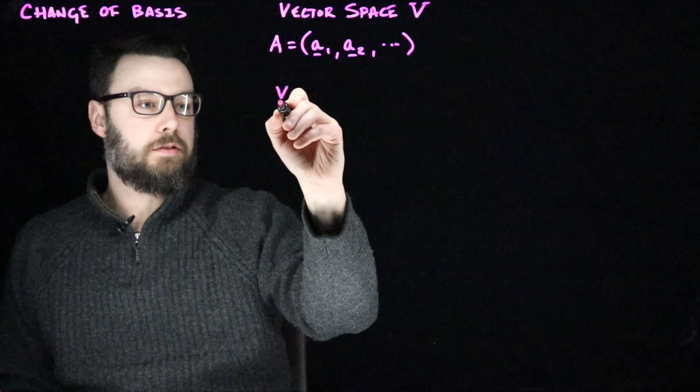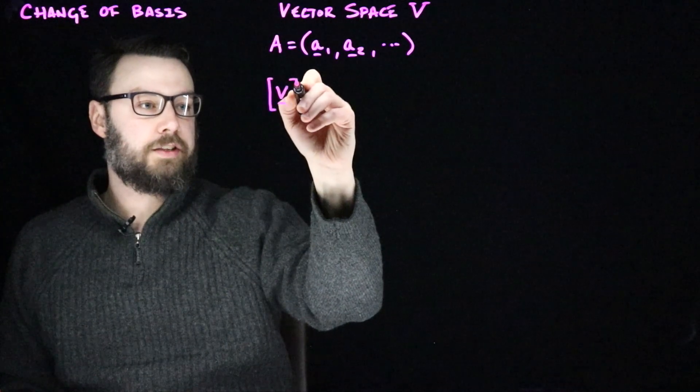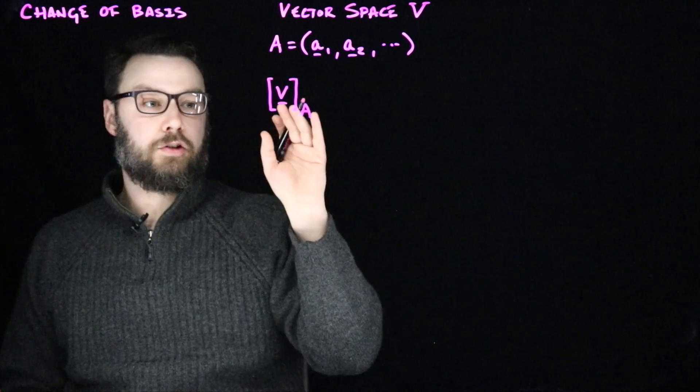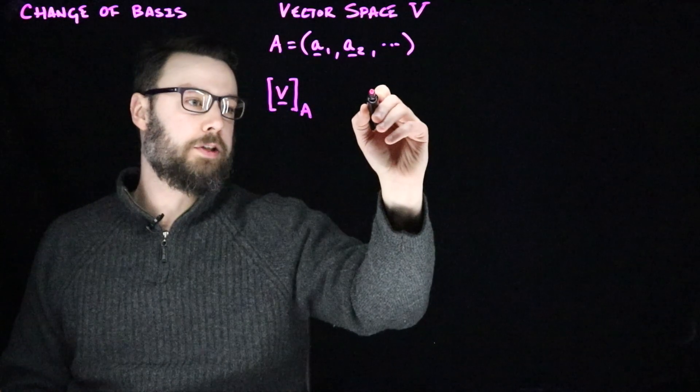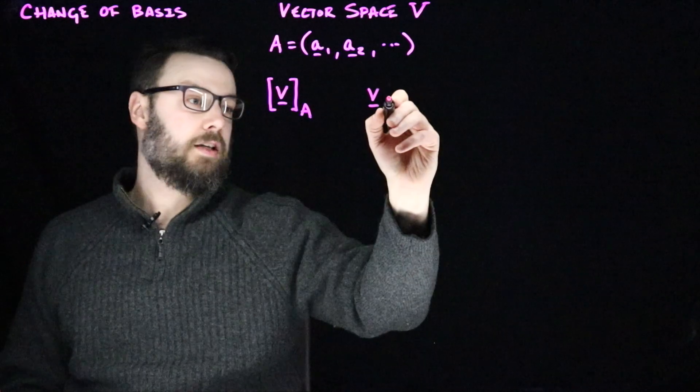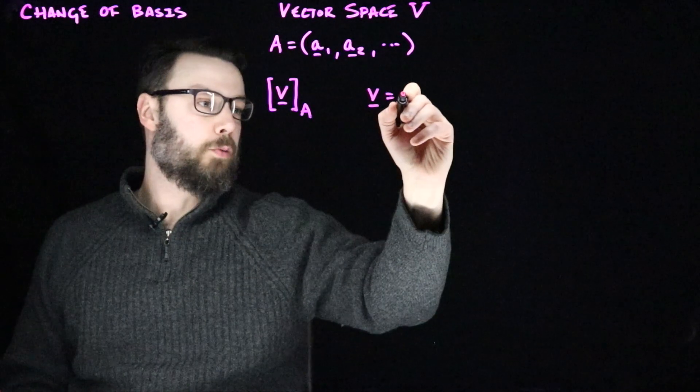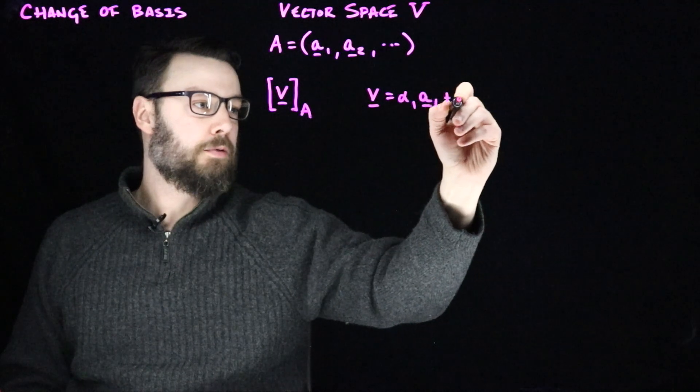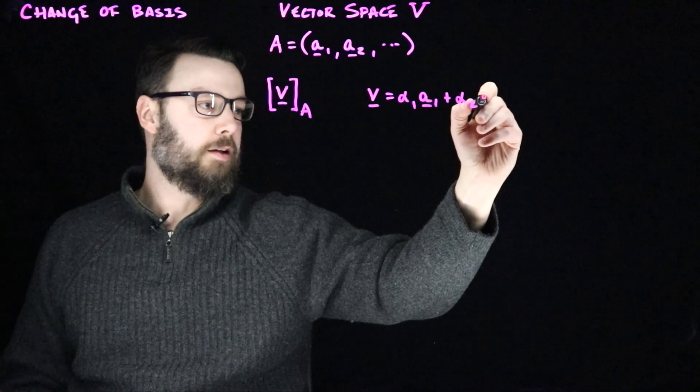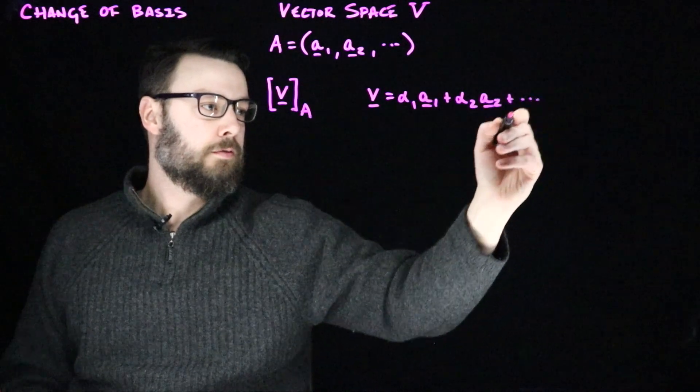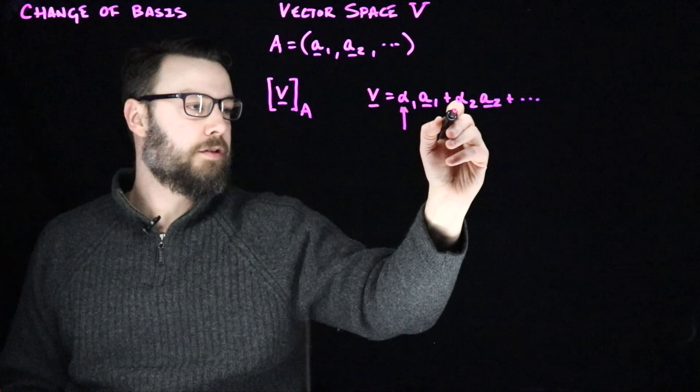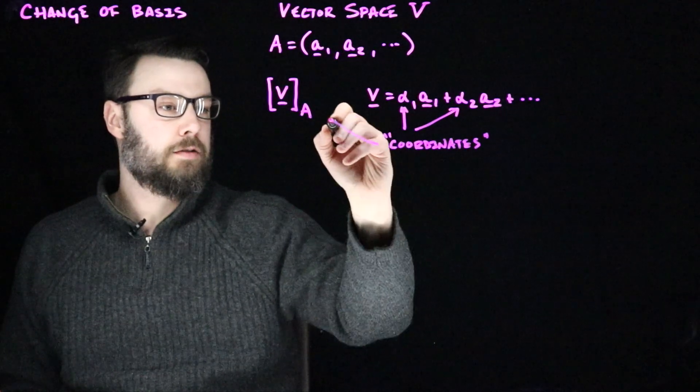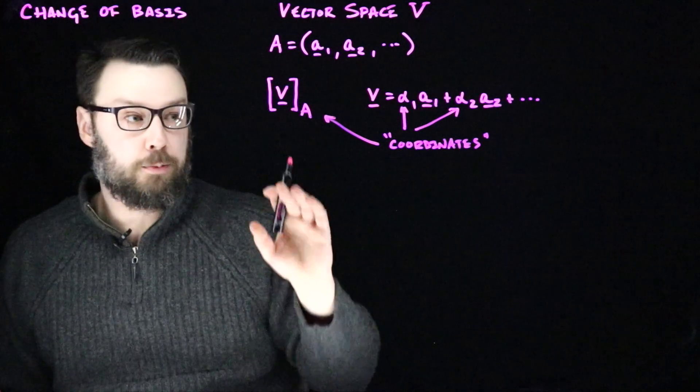Then we can talk about the coordinates of a vector v in the basis A. We would write that conventionally as the vector v written in the basis A. When we write something like this, we're referring to it as the coordinates of v. What we're saying is that we can write v as a linear sum within this basis. We would write some alpha 1 multiplied by the basis vector a1 plus alpha 2 multiplied by the basis vector a2 and so on. These alphas, we call those coordinates. And when we stack those up, that is what we get in the square bracket sub A.